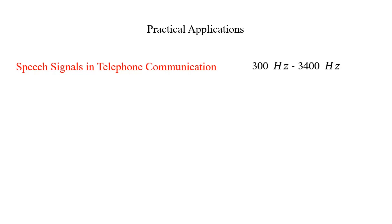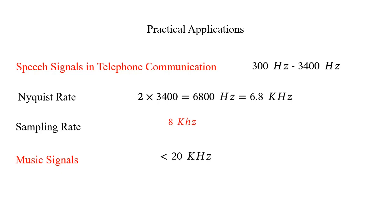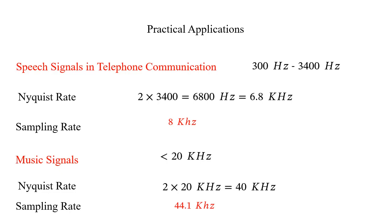There are many practical applications where samples are taken as per the sampling theorem. Speech signals in telephone communication are in the range of 300 Hz to 3400 Hz. Since the highest frequency component is 3400 Hz, the minimum sampling rate should be 2 × 3400 Hz = 6.8 kHz, but practically the sampling rate is kept at 8 kHz. Similarly, for music signals with the highest frequency component of 20 kHz, the Nyquist rate is 40 kHz, but the sampling rate practically used is 44.1 kHz. In almost all practical applications, the sampling rate is always kept higher than the Nyquist rate.